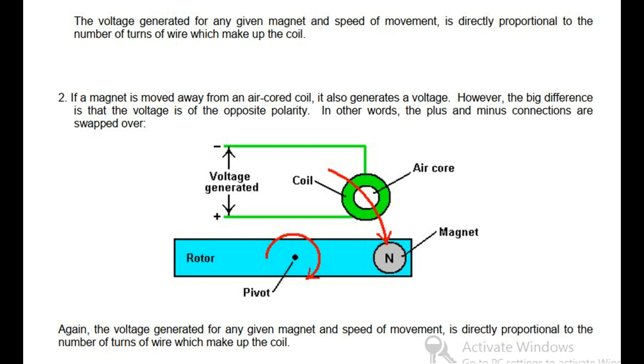Second: If a magnet is moved away from an air-cored coil, it also generates a voltage. However, the big difference is that the voltage is of the opposite polarity.